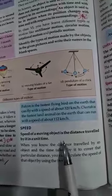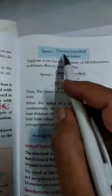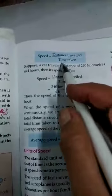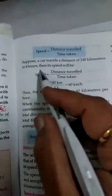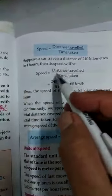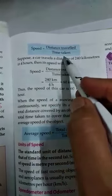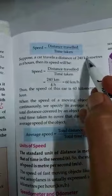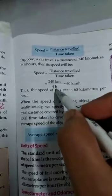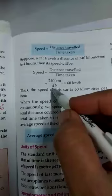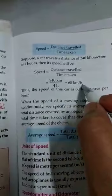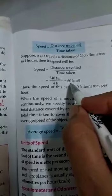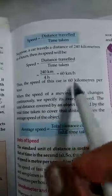Speed jo hai, woh time aur distance se judi hui hai. Speed hum kaise nikalti hai? Speed is equal to distance travelled upon time. Agar ek car hai, 240 kilometers 4 hours mein chalati hai, to uski speed kya hogi? Formula kya hai: speed is equal to distance upon time. Yahan humein kya diya hua, distance 240 aur time hai 4, to speed kitni hui? 240 kilometer agar woh 4 ghante mein chalati hai, iska matlab uski jo speed hai, woh 60 kilometer per hour hai. 1 ghante mein woh 60 kilometer chalegi. Is tariqe se aap speed calculate karti hai.